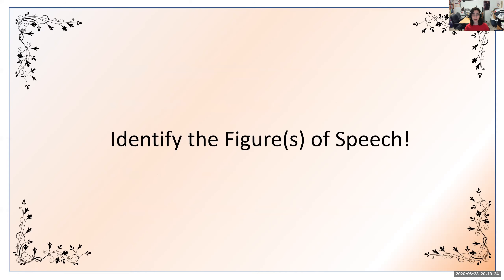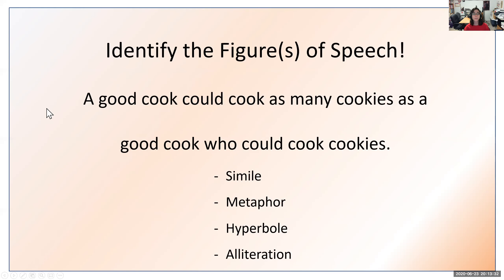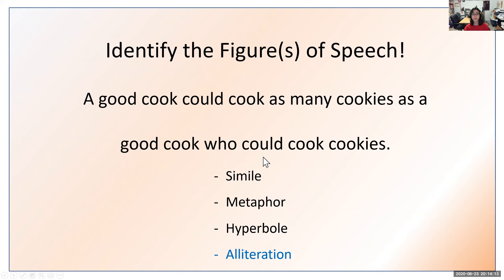Now it's time for our activity of identifying the figures of speech. We'll do the first one together. 'A good cook could cook as many cookies as a good cook who could cook cookies.' This is kind of like a tongue twister. Your options are: simile, metaphor, hyperbole, or alliteration. If you said alliteration, you are correct — this uses the letter C. Cook, could, cook, cookies — they all start with the letter C. That's why it's alliteration: the same beginning sound or letter in multiple words.